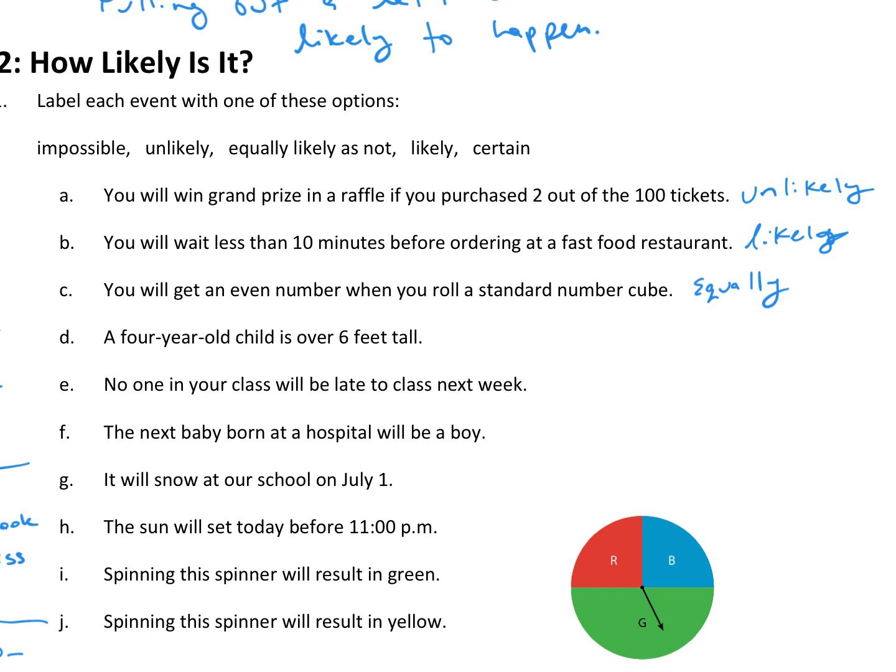A four-year-old child is over six feet tall. Now, for this one, really, that's impossible. But, if you put unlikely, I would accept it, because I guess you could have a four-year-old that's six foot. I mean, there's not been one that I know of, but impossible is probably a more appropriate answer.